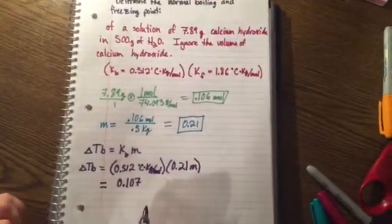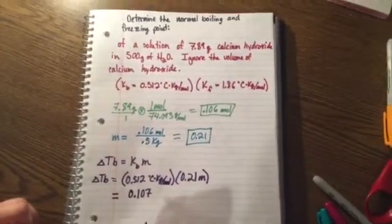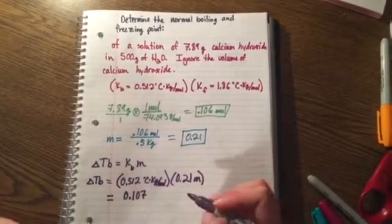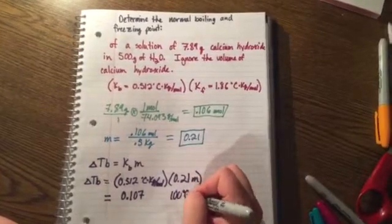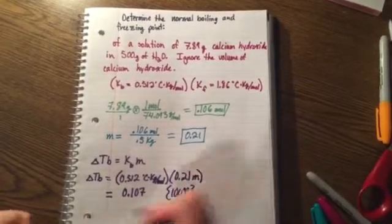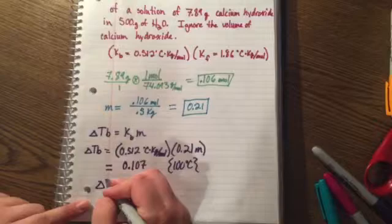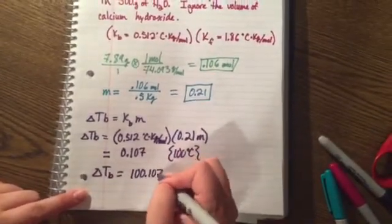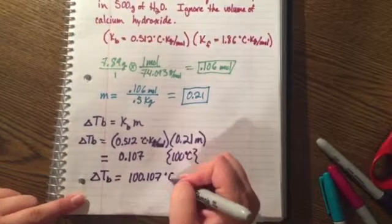You're going to add this to your normal boiling point for water which is 100 degrees Celsius. And so your normal boiling point is 100.107 degrees Celsius.